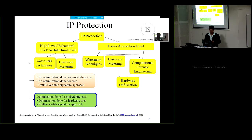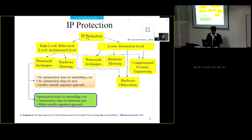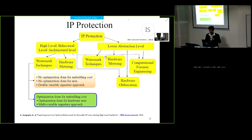IP protection is used to prevent or protect against IP piracy, IP counterfeiting, reverse engineering, and attacks such as path sensitization. IP protection can be tackled both at the higher abstraction layer — the high level or architecture level — and at the lower abstraction layer. Each of the higher and lower abstraction layers can protect an IP core by four methods: watermarking, hardware metering, hardware obfuscation, and computational forensic engineering.